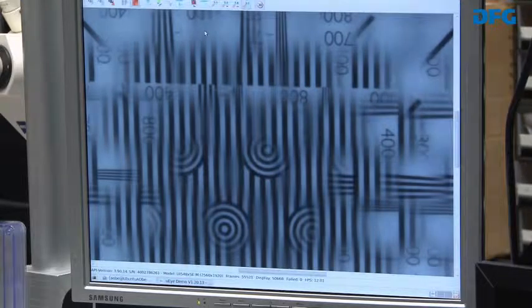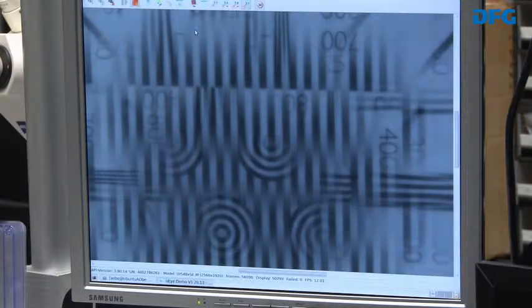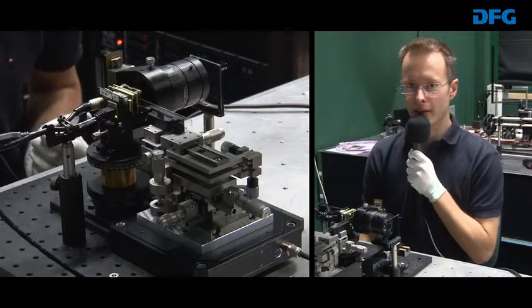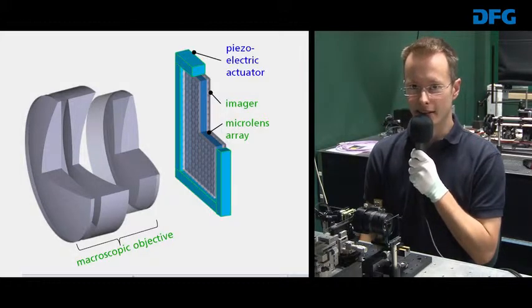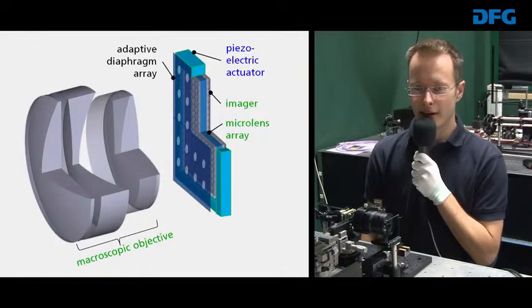In the joint project, we will integrate further components from our partners. Miniaturized actuation frames from Fraunhofer IKTS in Dresden, variable apertures from the University of Applied Sciences in Kaiserslautern, and polarization filters from the University of Stuttgart.